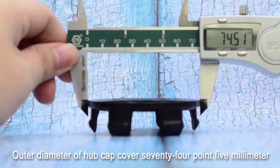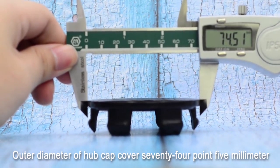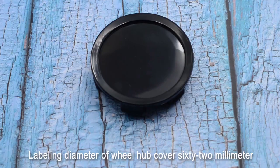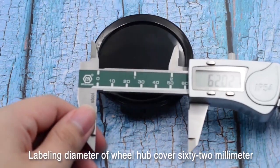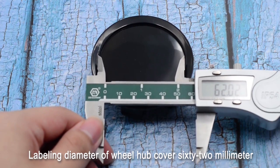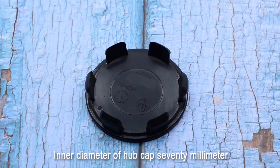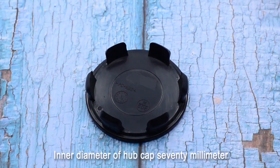Outer diameter of hubcap cover 74.5 mm. Labeling diameter of wheel hubcap 62 mm. Inner diameter of hubcap 70 mm.